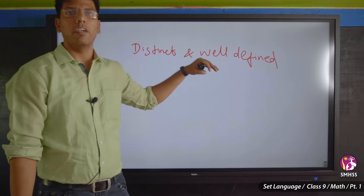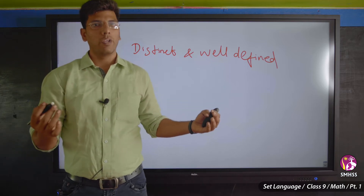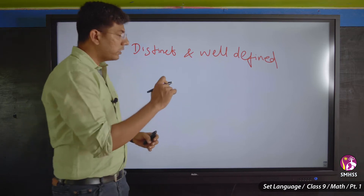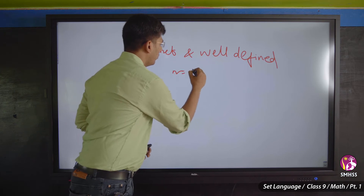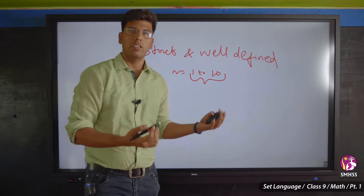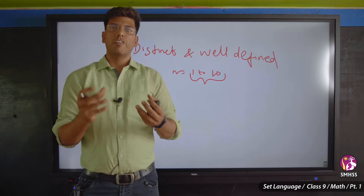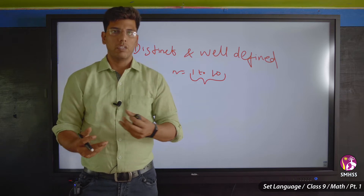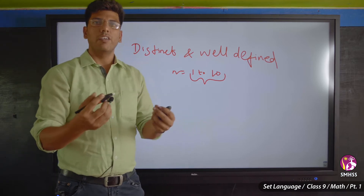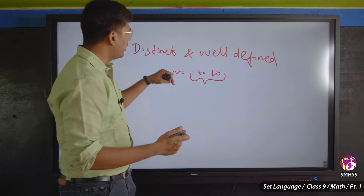What is distinct and well-defined? If I ask you to list numbers from 1 to 10, everyone can say 1, 2, 3, 4, 5, 6, 7, 8, 9, 10 — that is distinct. The answer cannot change. But if I ask you to list your favorite actors, everyone has different views. The answer is not the same, so that is not well-defined.